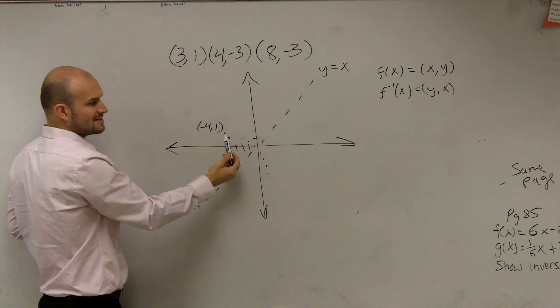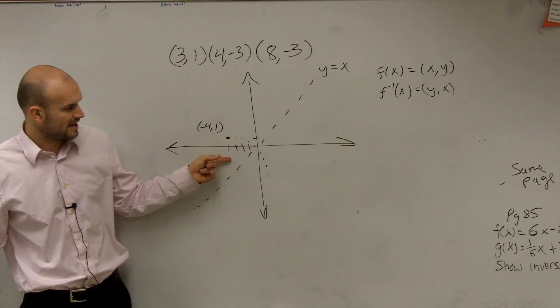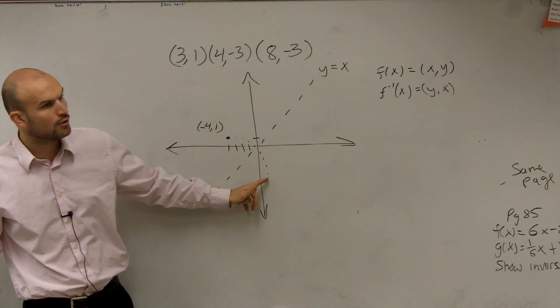If I said reflect over the y-axis, you would reflect over here. If I said reflect over the x-axis, you would reflect down here. If I say reflect over the xy line, you're going to reflect it down there. So it's going to be a point over there.